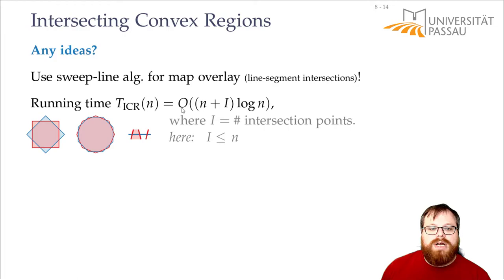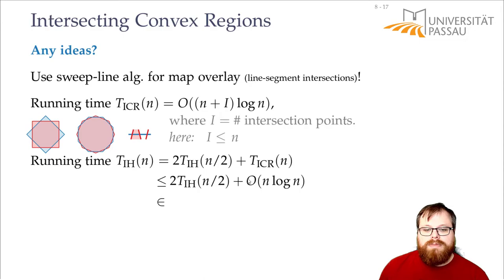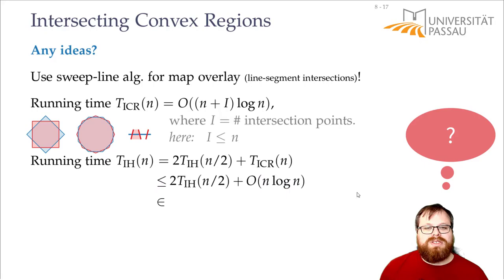So the running time of the sweep line is O(n log n). That means the recurrence for intersect-half-planes is T(n) = 2T(n/2) + O(n log n), where the O(n log n) term comes from intersecting the two convex regions.